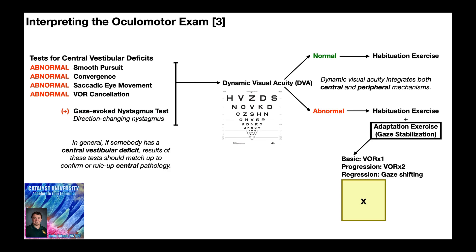The most basic one, which is almost always given first, is the VOR times one. The VOR times one can be progressed into the VOR times two, which is more difficult, and it can be regressed into gaze shifting.